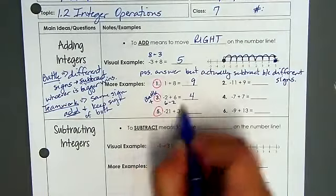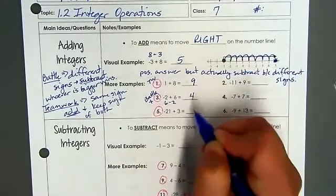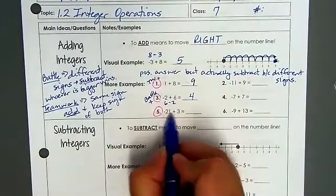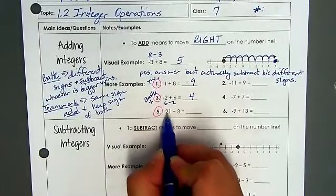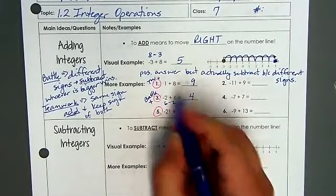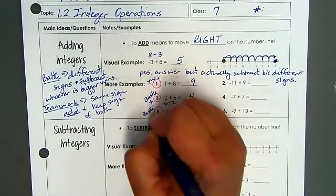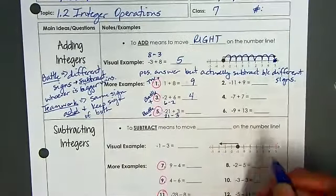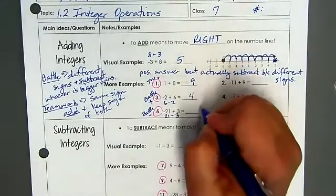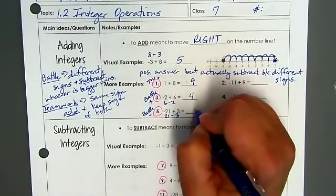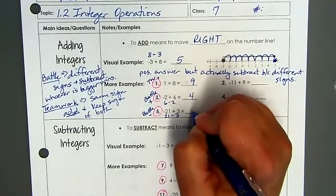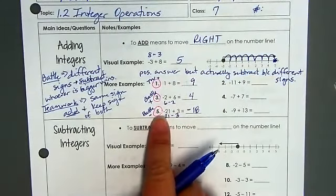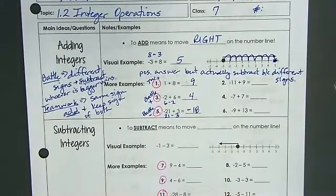Next, looking here again, this one was teamwork and the positives won here. For here, we have a negative and a positive. But in this scenario, the negatives are winning because 21 is bigger than 3. So therefore, this is doing battle but the negatives are winning. So I'm technically going to be doing 21 minus 3, which gives me 21 minus 3, that's going to be 18. But this is a negative 18 because the negatives are winning.